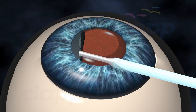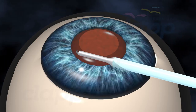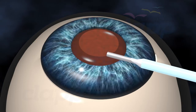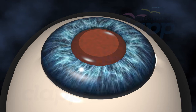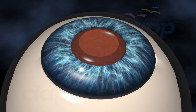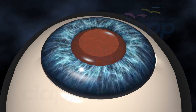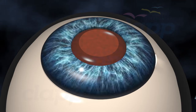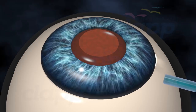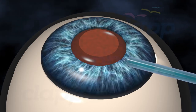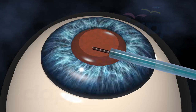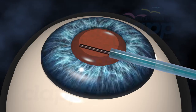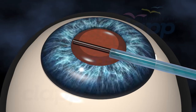A red color can be seen after the cataract lens removal. This orange-reddish color is the reflection from the eye's retina. After the cataract is removed, your surgeon will insert a clear artificial lens called an intraocular lens, or IOL, using an injector.